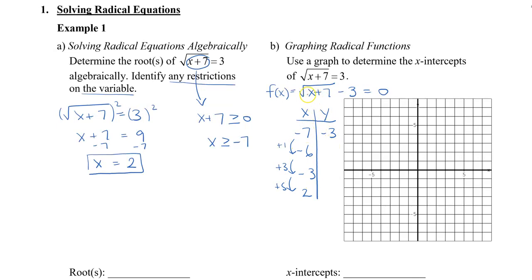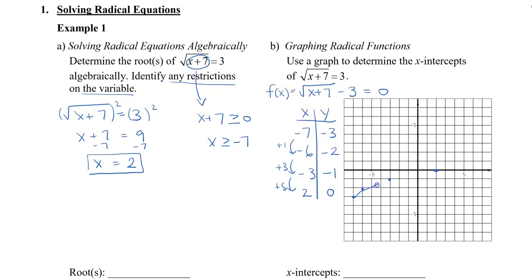When I plug in negative 6, I get negative 2. Plugging in negative 3: negative 3 plus 7 is 4, square root of 4 is 2, minus 3 is negative 1. Plugging in 2: I get 9, root 9 minus 3 is 0. So I graph the four points: negative 7 and negative 3; negative 6 and negative 2; negative 3 and negative 1; and 2 and 0. Remember x has to be greater than negative 7, so start at the point (negative 7, negative 3) and graph to the right.